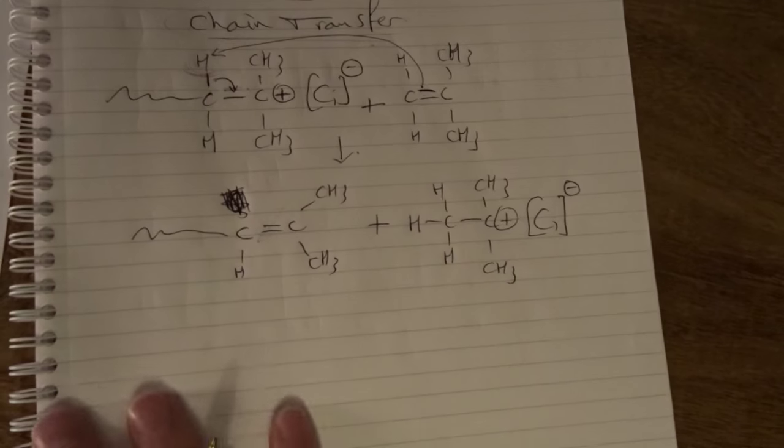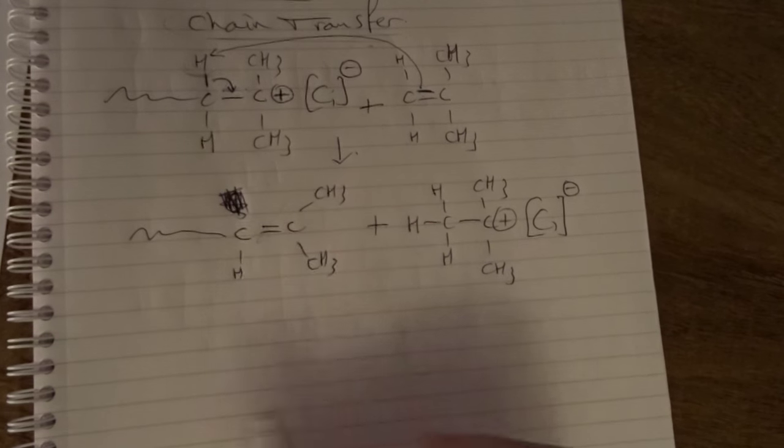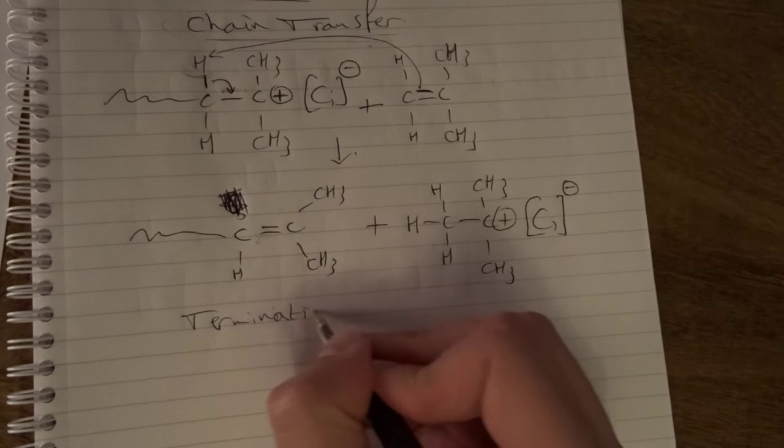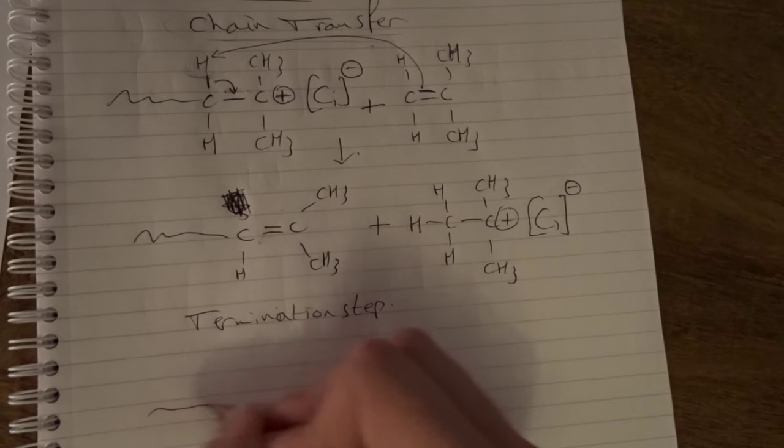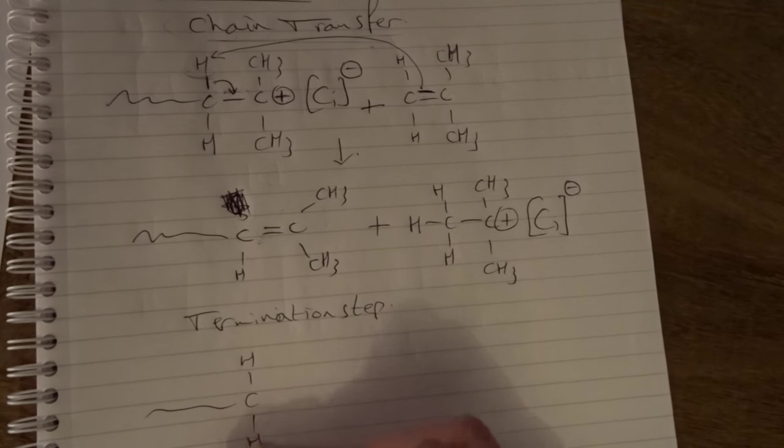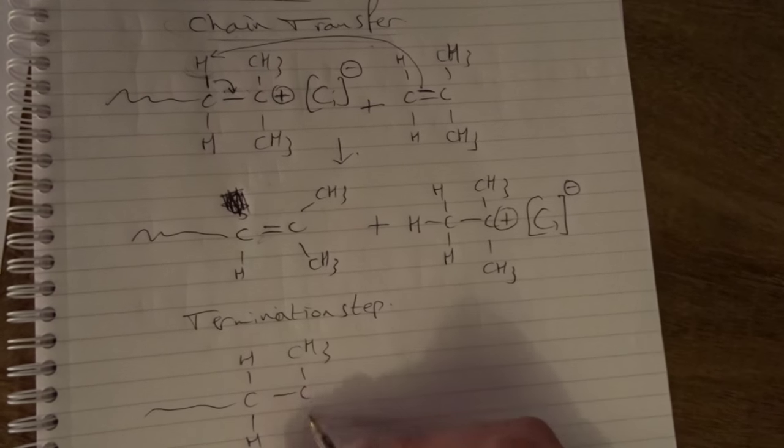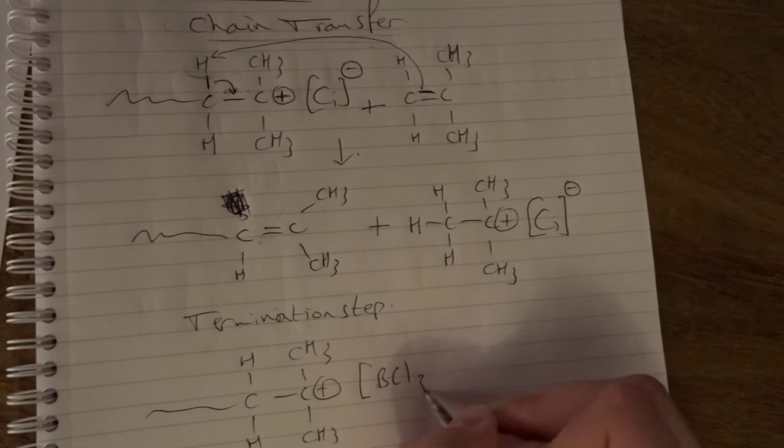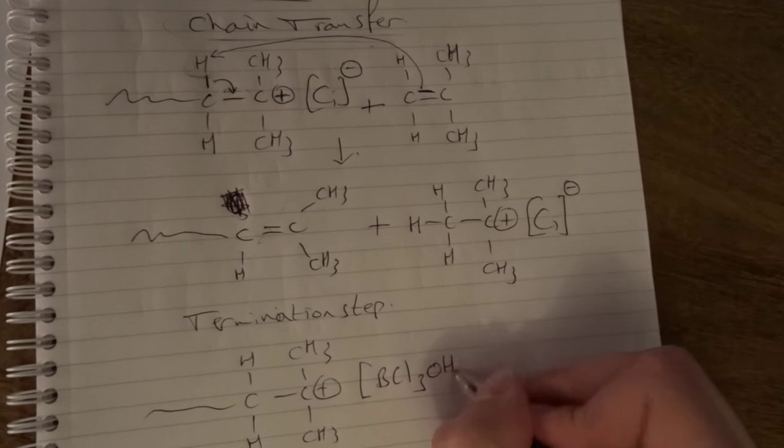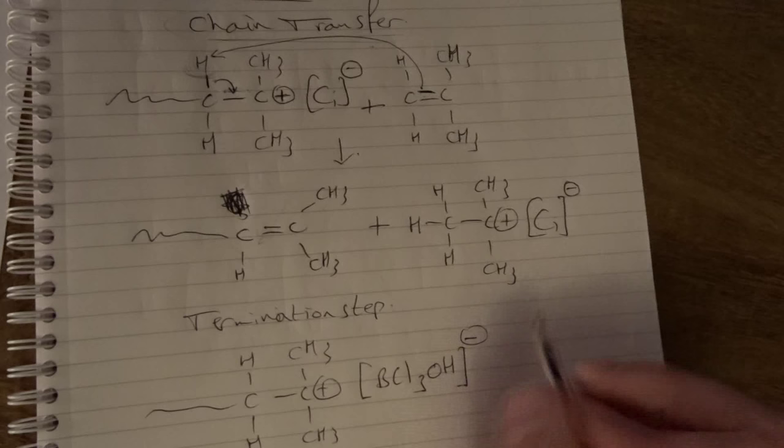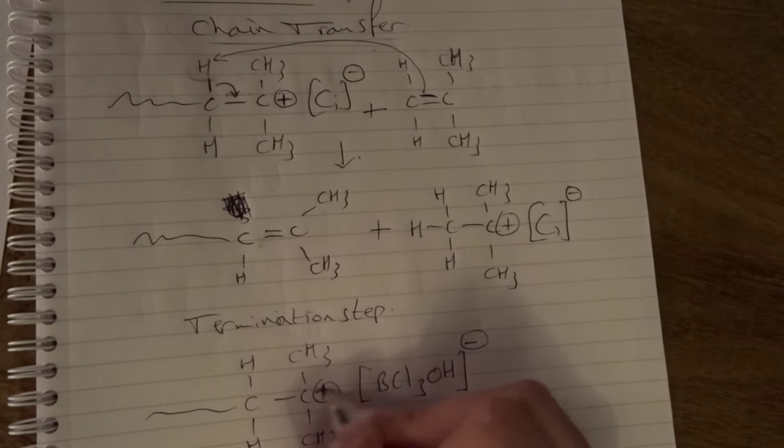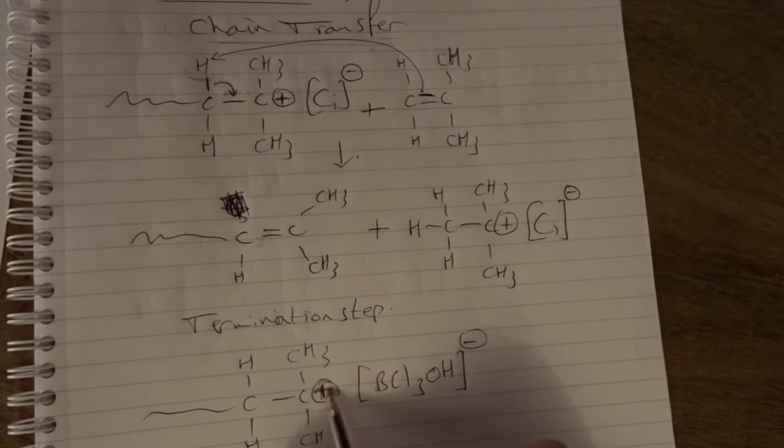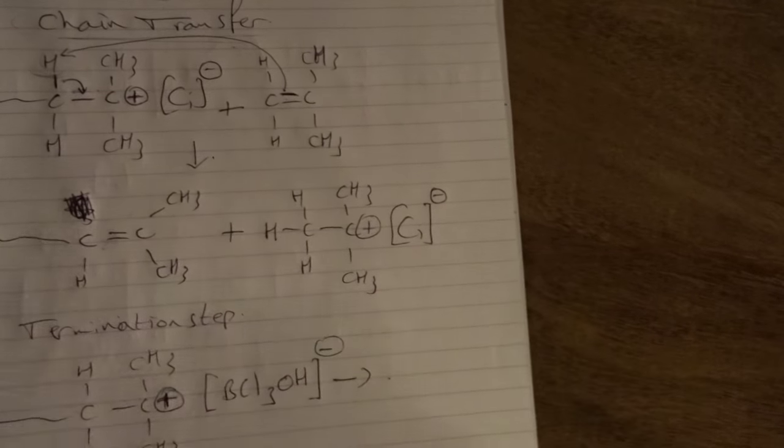And the last step, an example of a normal termination step. We draw the chain end with a positive charge. For example, now we write down the initiator with a negative charge. We can see in this example that this chloride part can react with the positive charge.